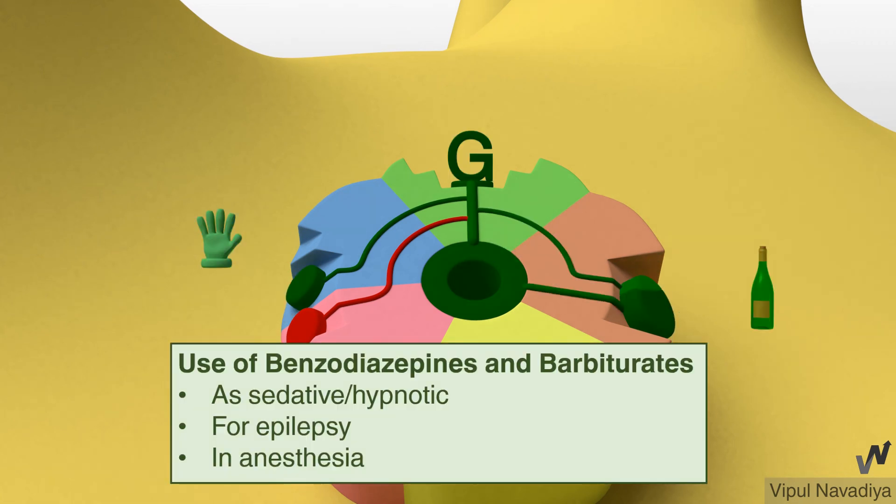Benzodiazepines and barbiturates both calm neurons down and are used when we need to do so. As sedative and hypnotic, for epilepsy, in anesthesia, etc.